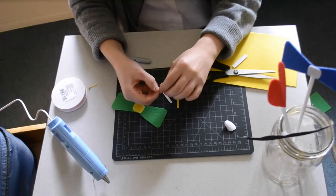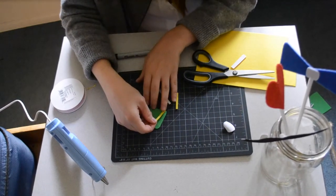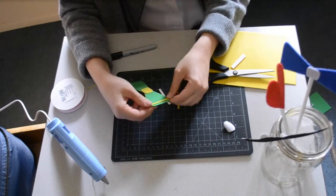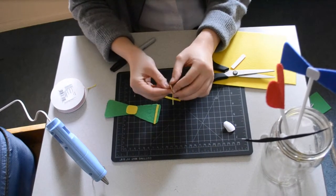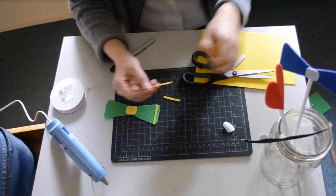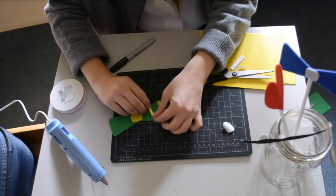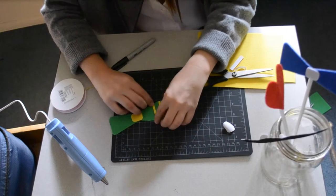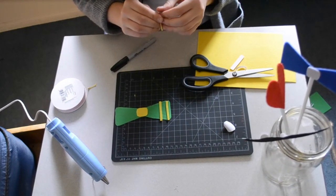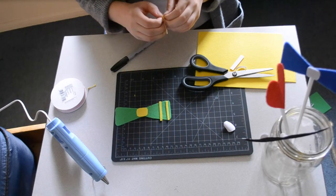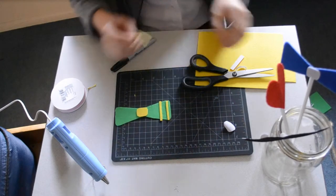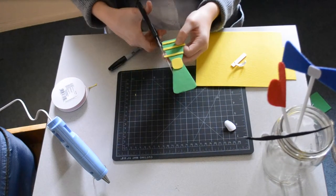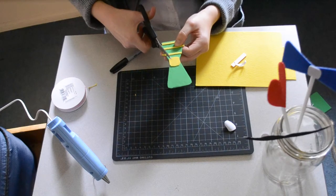When you're making this, be sure that you do get stiffened felt because if you get normal felt, they'll flop around and they just won't look as nice. Okay, now I'm just going to trim off any extra.